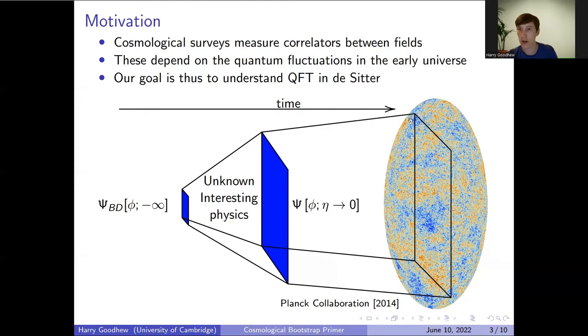We can then measure things like the large-scale structure statistical properties through their correlation functions, which then give us information about the correlation functions on this final slice, and therefore we can gain insight into what happened during this initial inflationary phase through modern day observations.